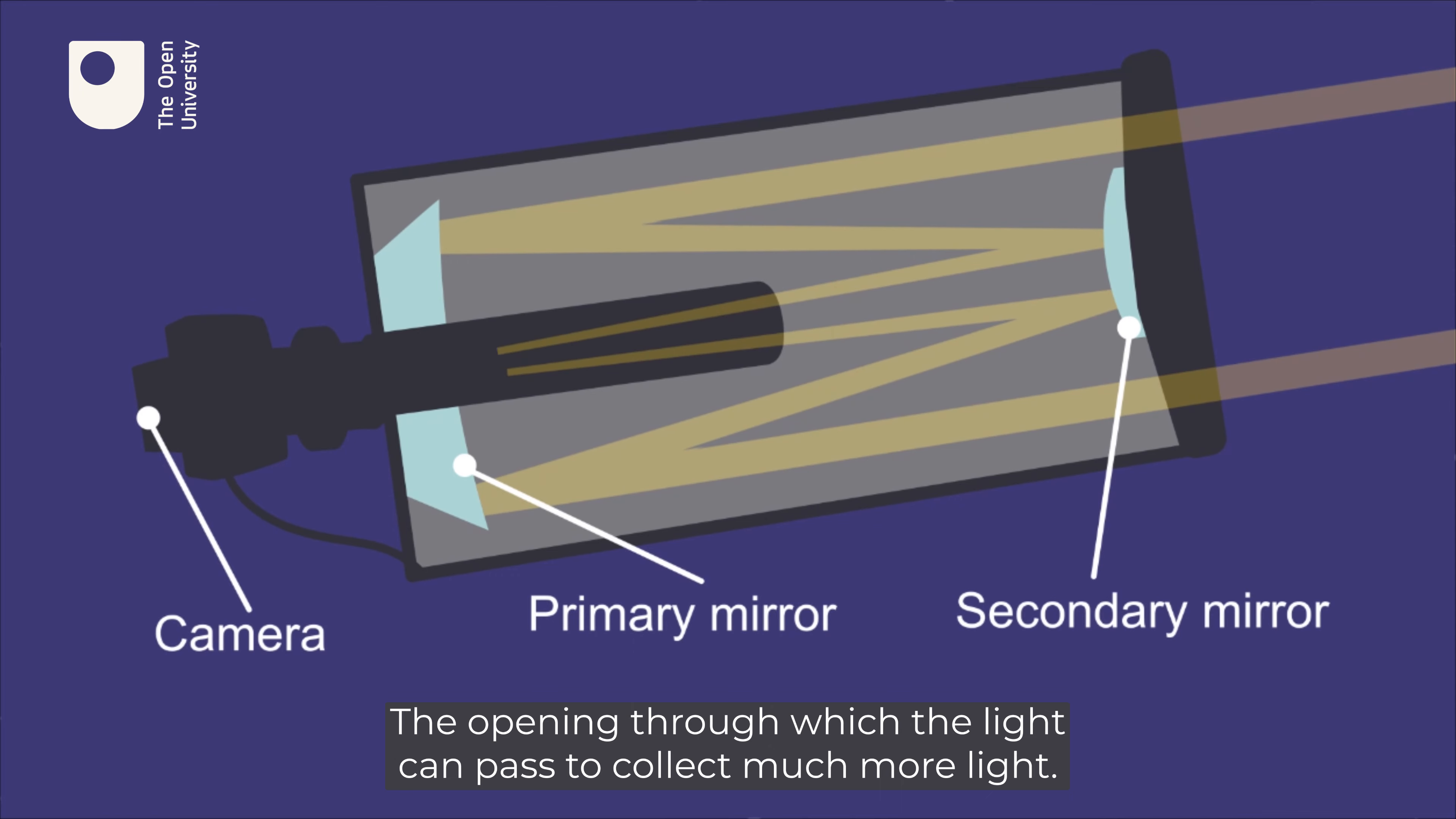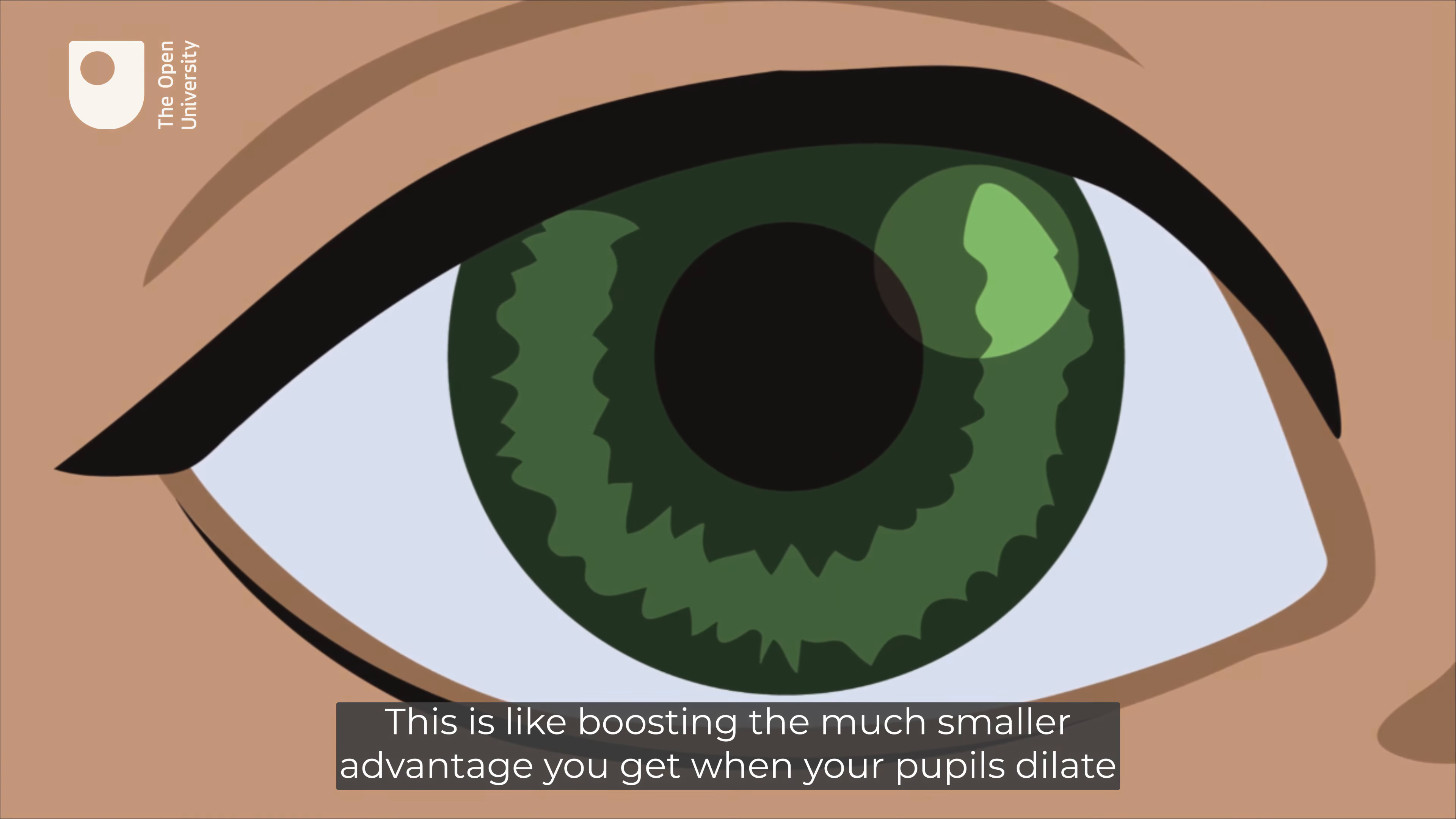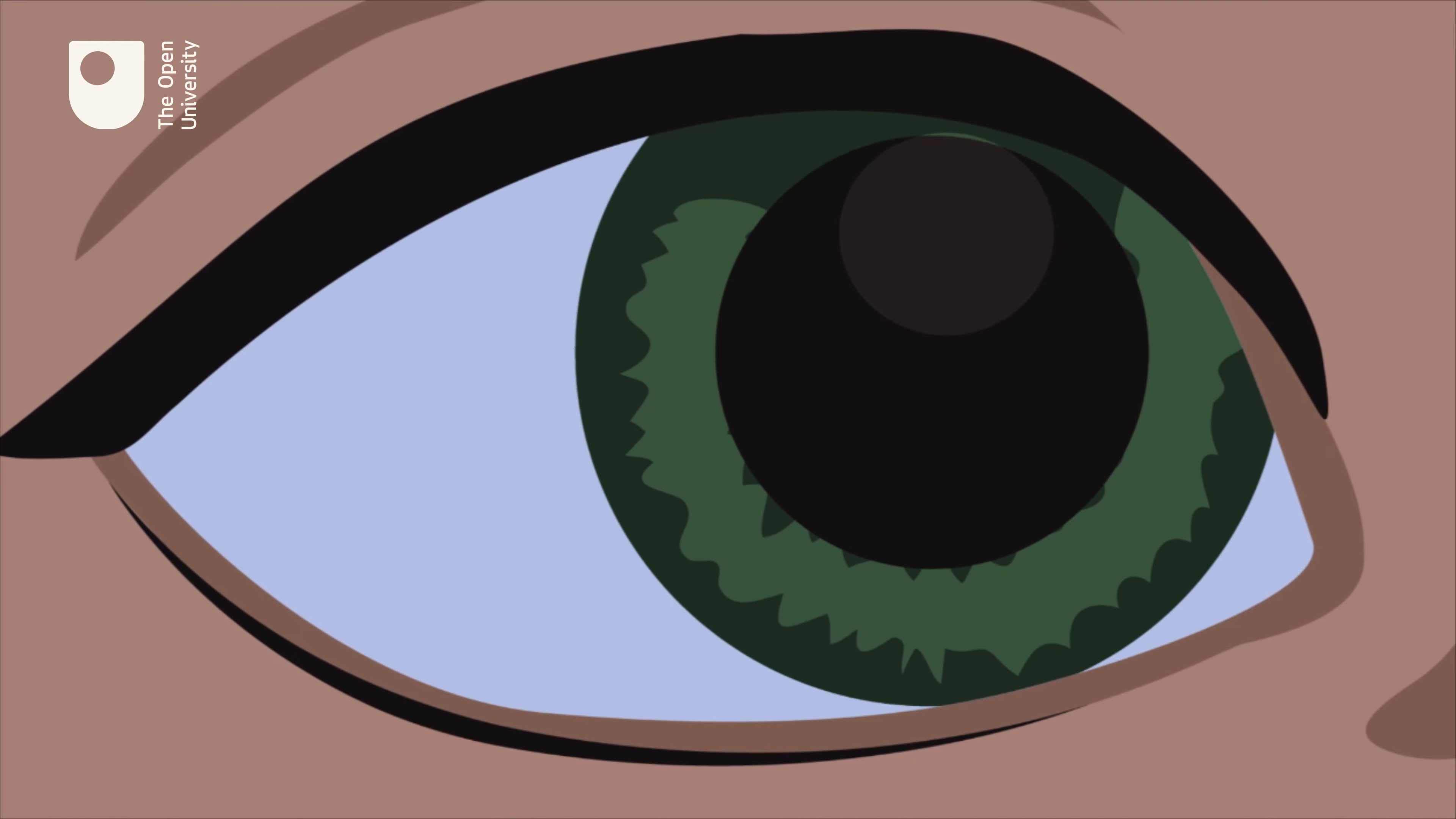But professional astronomers often want to see fainter objects in space that their eyes alone can't pick out. Which is why they use scientific instruments to help gather more light.